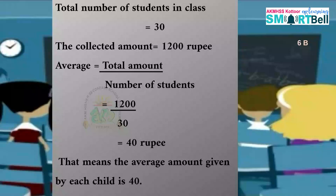But we can say something about the average amount each gave. Because we know about average and we know how to calculate it. Average equals total amount divided by number of students. That is 1,200 divided by 30, which is equal to 40. That means the average amount given by each child is 40 rupees.